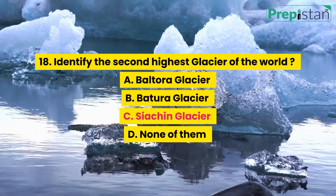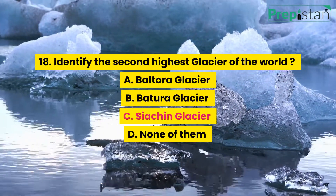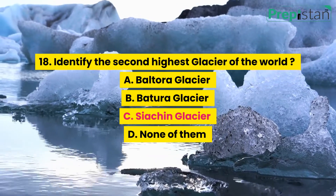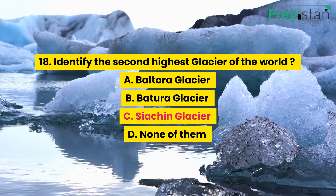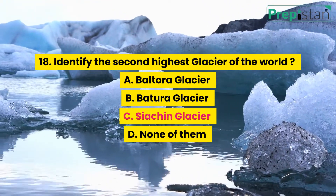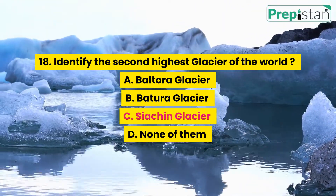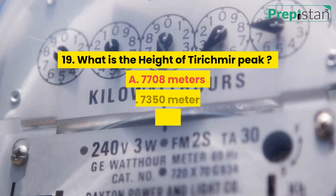Question 18: Identify the second highest glacier of the world. A. Baltoro Glacier, B. Biturah Glacier, C. Siachen Glacier, D. None of them.